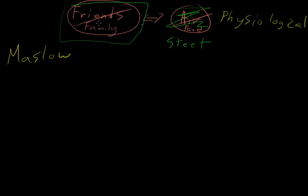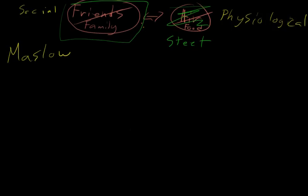But then friends and family over here on this side, these are more social needs. So I'm guessing that these are the two he might have started with, and then he expanded his theory to five things, which I'll show you.